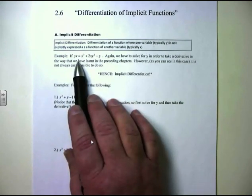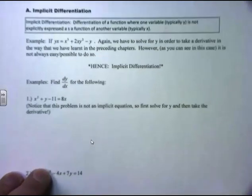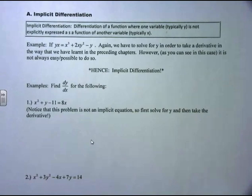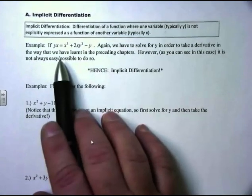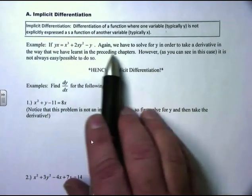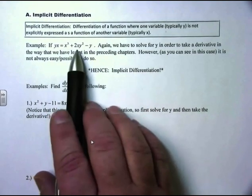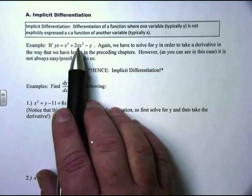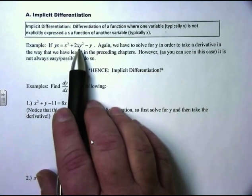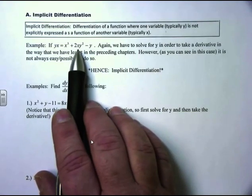An example of an implicit function would be something like y times x equals x cubed plus 2x times y squared minus y. We have to solve for y in order to take the derivative in the way we've learned in the preceding chapters — we typically want to solve for y first. But what happens when you can't solve for y? You can still find the derivative, but you have to use a technique called implicit differentiation when you can't get your equation just in terms of y.